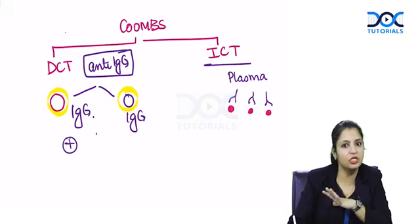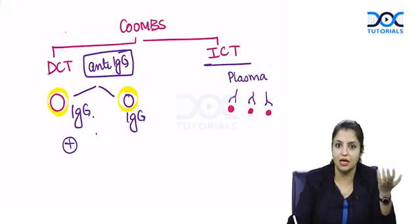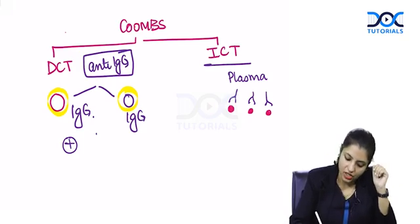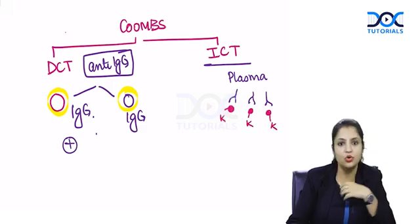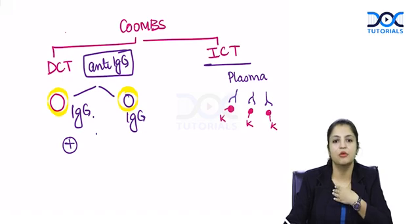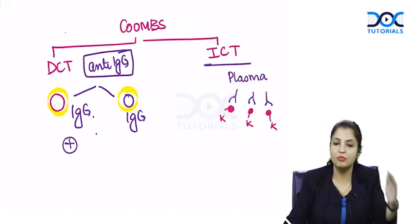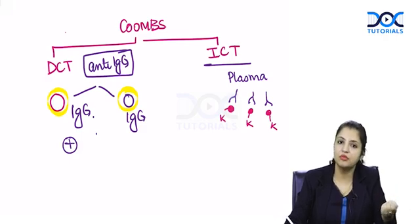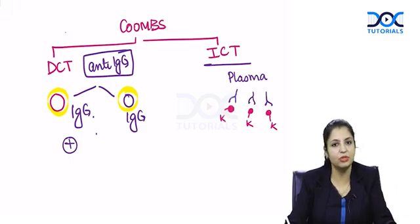Let's say these antibodies are present against Kel. I have K on my red cells but I don't know that. I don't know I have Kel antigen on my red cells, but I need blood today. You take a blood bag, take the plasma from that bag, and mix it with my cells.